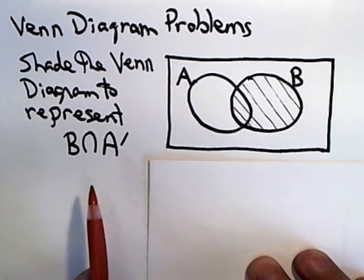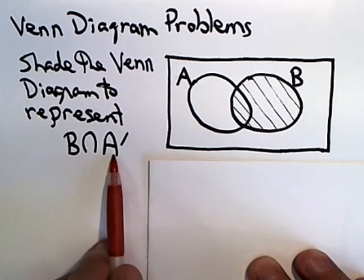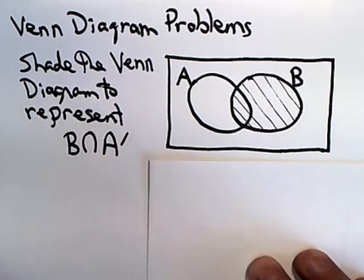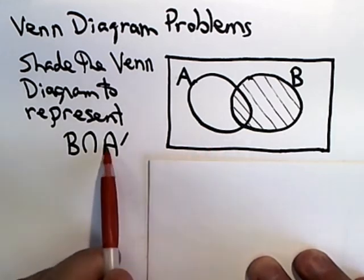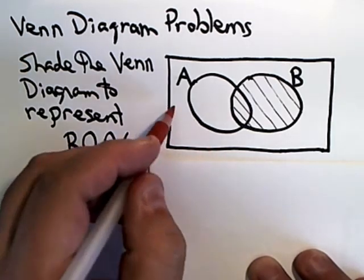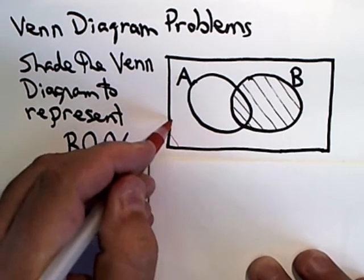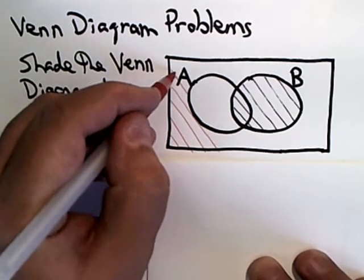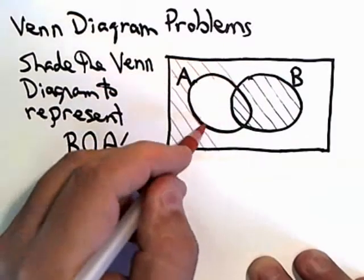And then shade the set A complement, which are the things that aren't inside of A. If you're going to do it this way, you're probably going to use two different colors or some kind of different cross-hatching scheme. But I'm going to use a different color. A complement are the things that are not inside of A, so I will shade everything that's not in the set A. So when I shade, everything goes as long as it's not in the circle A.